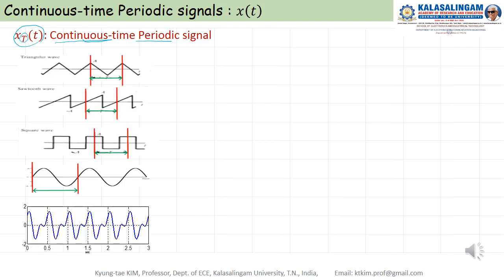For example, there are many kinds of waveforms. This is a triangular waveform — you can see from here to here, that is period T. This is a sawtooth wave — from here to here is also the period. This is a rectangular waveform — here to here is the period. And this is a sinusoidal signal — here to here is also the period.